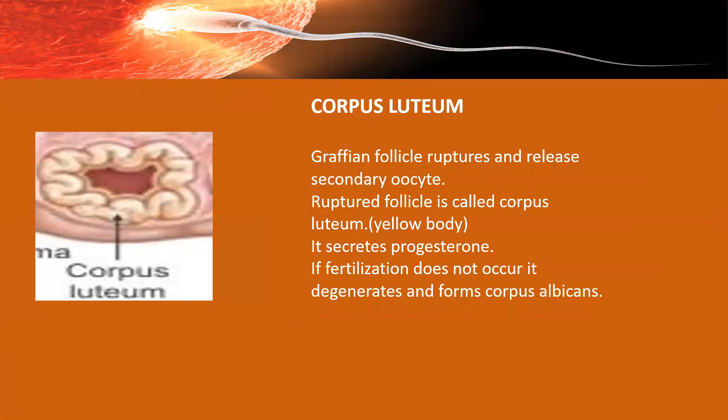However, if fertilization doesn't occur, the corpus luteum will also disintegrate, and the remaining structure is known as the corpus albicans, which slowly disappears.